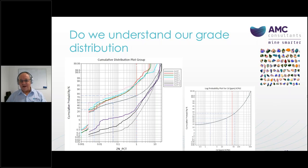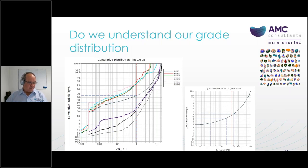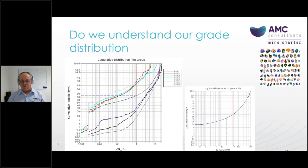We also need to understand our grade distribution — where are our important grade cutoffs in these resources? Are we dealing with gold, lithium, iron ore, or gypsum? We have to understand the grade distribution no matter what. Using tools like CDF plots across different domains in software such as Supervisor, make sure you understand what your populations are doing after your domaining discussion. Are all samples in your near-surface environment the same as your deeper samples? Do your deeper samples affect the statistical distribution of grade? There's no one right way — you just have to look at it, monitor it, and be aware.